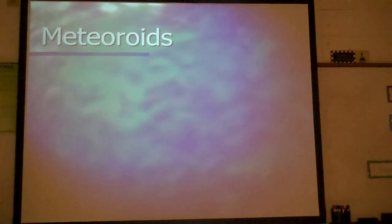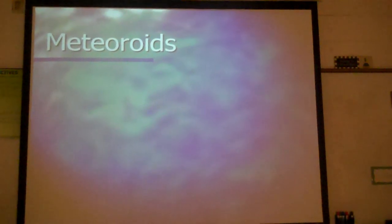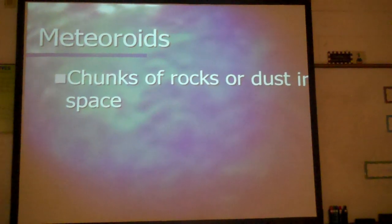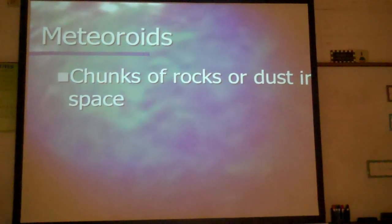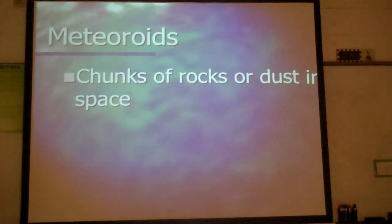The next object we have are meteoroids. Remember, an asteroid is in space, and a meteoroid is also in space. These are chunks of rocks or dust in space. They are smaller than the asteroid and a little bit larger than the comet.